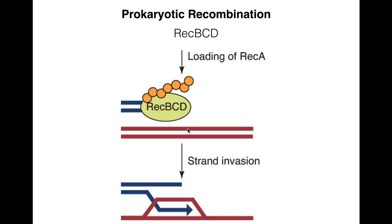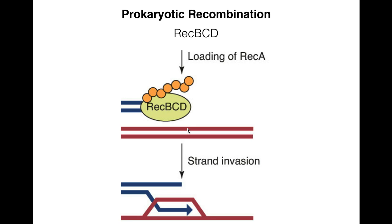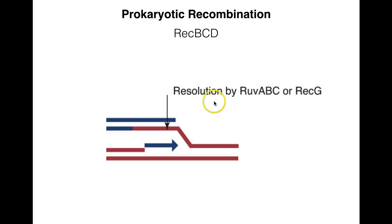This strand facilitates recombination. So we've got strand invasion and formation of the D-loop, and the DNA is going to go through its recombination as noted earlier. Once that strand invasion has occurred, the other major proteins involved in prokaryotic recombination are the RUV-A, B, C, or the REC-G proteins.